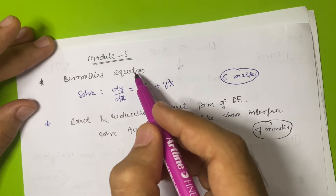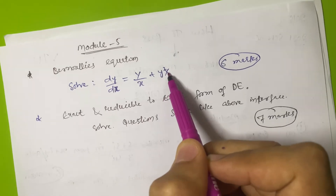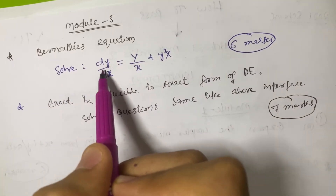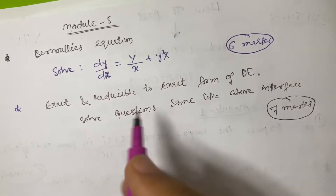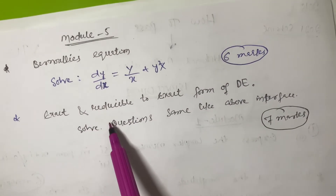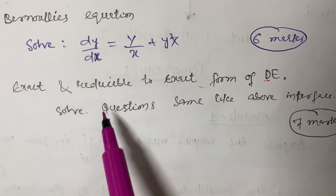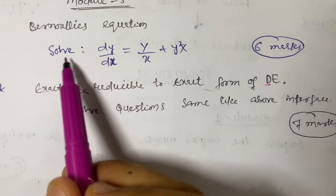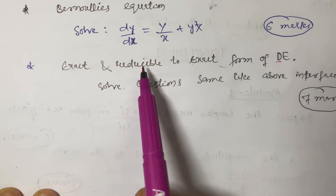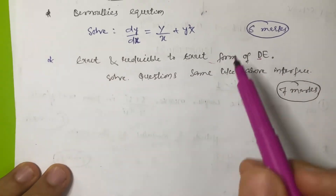In Module 5, they will tell you to solve the Bernoulli equation, for example: dy/dx = y/x + y² · x. You apply Bernoulli's equation - it's a simple differentiation topic and you can score 6 marks. There is also a question on exact and reducible-to-exact form of differential equations. Solving those types of questions can score you 7 marks, so Module 5 also gives you 13 marks.